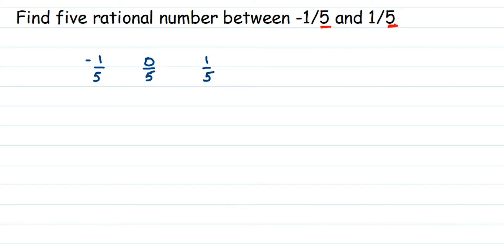one rational number visible, which is 0/5. There are many rational numbers actually, but we could only find 0/5 directly. So how do we find 5 rational numbers? Since they're asking for 5, we're going to find the equivalent rational numbers of -1/5 and 1/5.